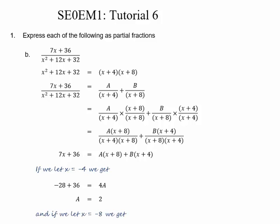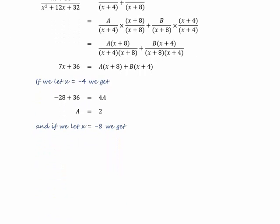The next thing we do is let x equal minus 8. If x equals minus 8, this term disappears. 7 times 8 is 56, so we're going to get minus 56 plus 36. Minus 8 plus 4 leaves us with minus 4B. Minus 56 plus 36 gives us minus 20, so B is equal to 5.